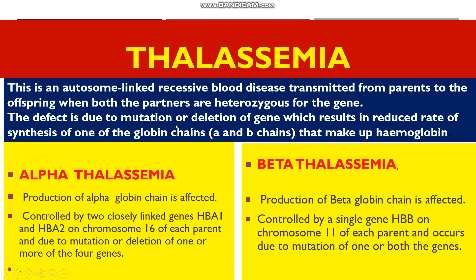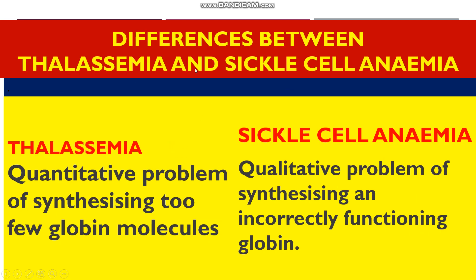The defect in thalassemia is due to mutation or deletion of a gene, resulting in a reduced rate of synthesis of one of the globin chains. Unlike sickle cell anemia, thalassemia is a quantitative disorder — it results in synthesis of too few globin molecules — whereas sickle cell anemia is a qualitative disorder that results in an incorrectly functioning globin protein.